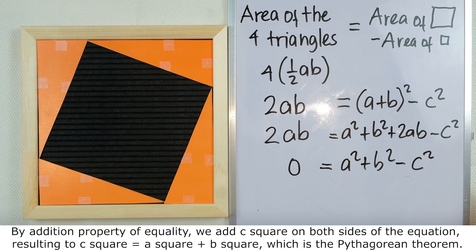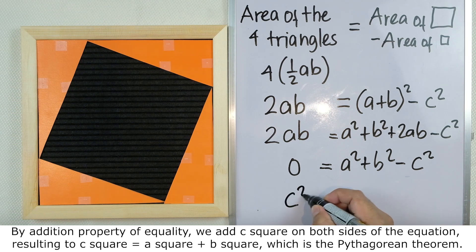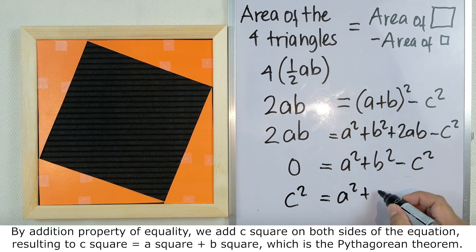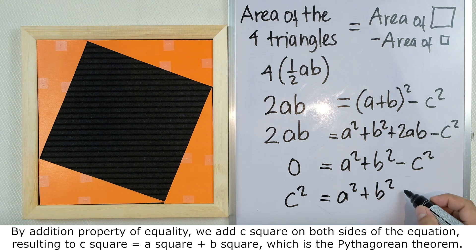By addition property of equality, we add c² on both sides of the equation. And we get c² = a² + b² - c² + c².